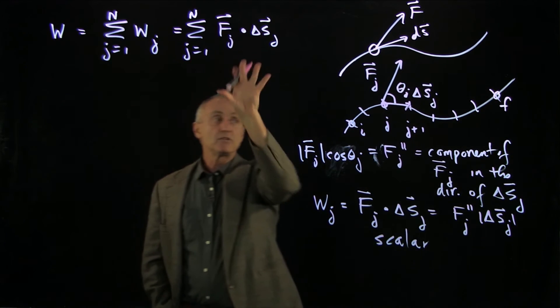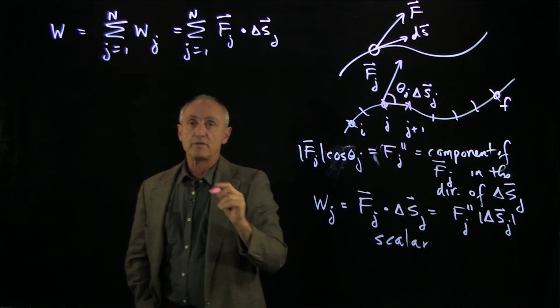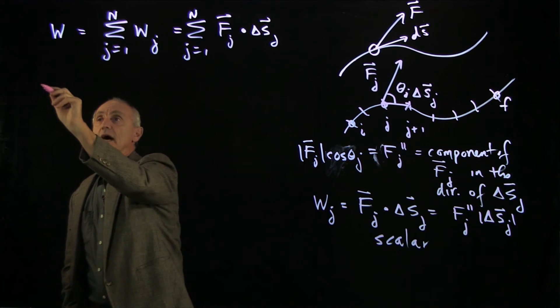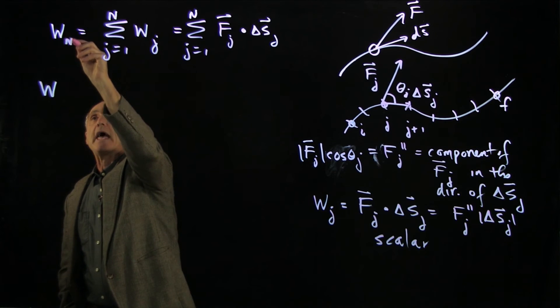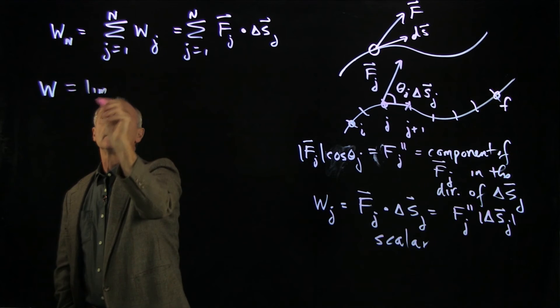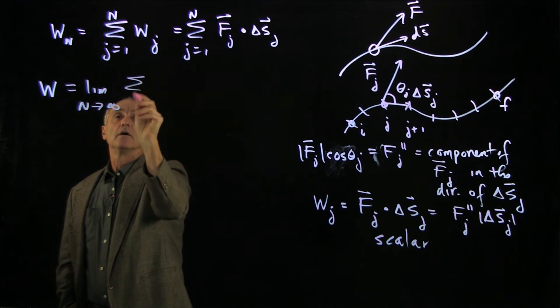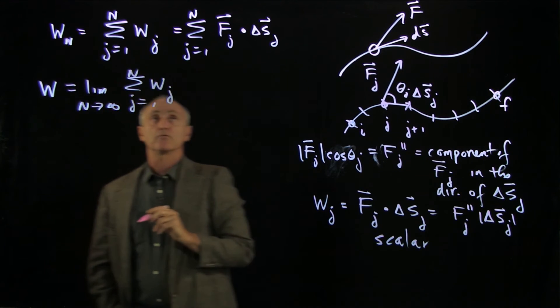However, this answer depends on how fine we broke up this path. And what we've seen many times now is that the actual work that we want, let's write this as n because it depends on the number of paths, is the limit as n goes to infinity of this sum of scalar amounts of work.